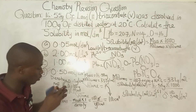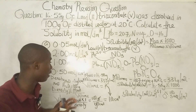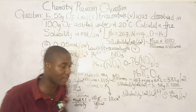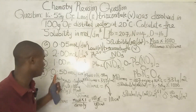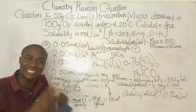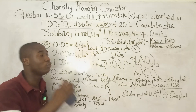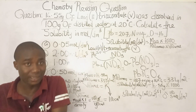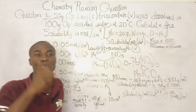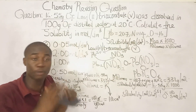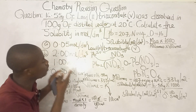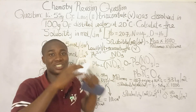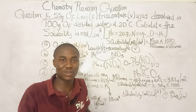The solubility of the compound is 0.5 moles per dm³, which is option D. I have a full video lesson explaining every concept of solubility — in mol/dm³ and in grams per 100 grams of water — so check that out. If you haven't subscribed yet, click the subscribe button and share these lessons with your friends. Thanks for watching.